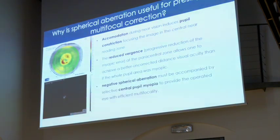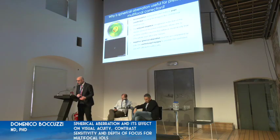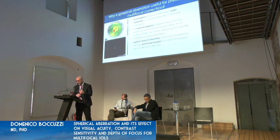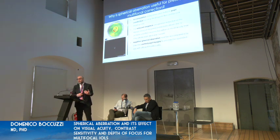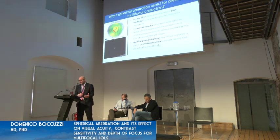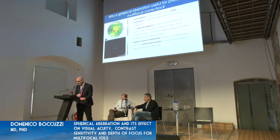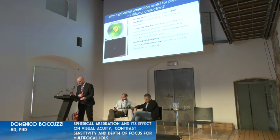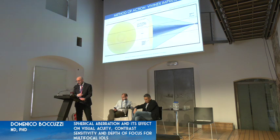During near vision, pupil constriction allows focusing the image on the central near-reading zone. When the pupil dilates, the reduced divergence at the pericentral zone allows better distance visual acuity. It is important that negative spherical aberration be accompanied by selective central pupil myopia to produce the multifocality of the eye. This is the principle behind how the lens shape creates its multifocal function.